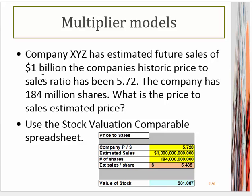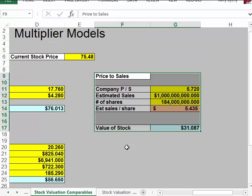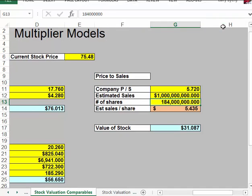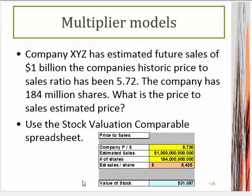For the price-to-sales example: a company has a billion dollars in sales, the historical price-to-sales ratio has been 5.72, and the company has around 184 million shares. We can use the stock valuation comparables spreadsheet for this. If we open it up, you can find the stock valuation comparables tab right here, where we can make these calculations. Most of this data is very easy to find. In a related video, I show you where to go to get the information to plug into these boxes for your company or a potential investment.